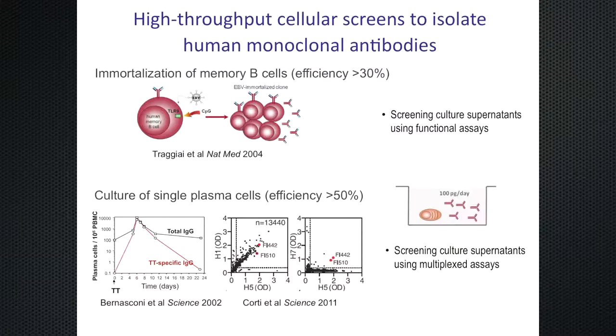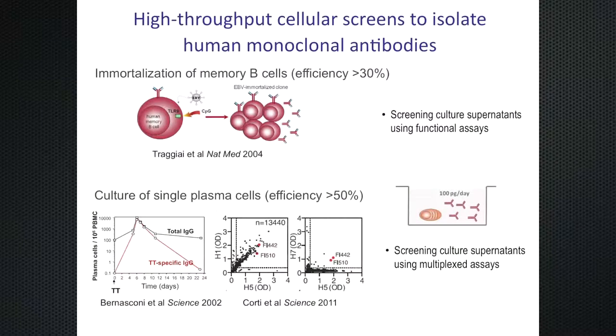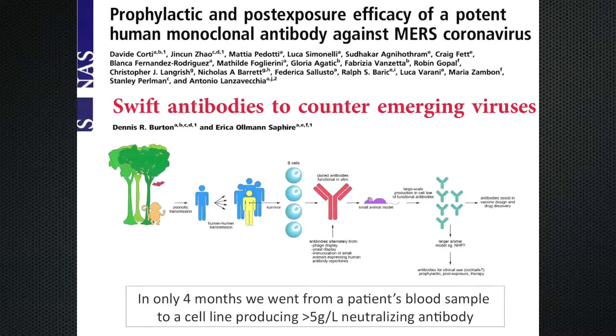These are the methods we use to isolate antibodies. We can very efficiently immortalize memory B cells and screen directly the culture supernatants for, for instance, neutralization or other functions. We can also maintain in culture plasma cells, which are non-dividing, and do screening in a high-throughput fashion. We screen something more than 10,000 cultures to identify some rare antibody-producing cells.